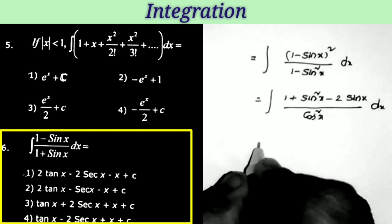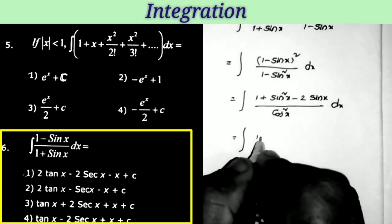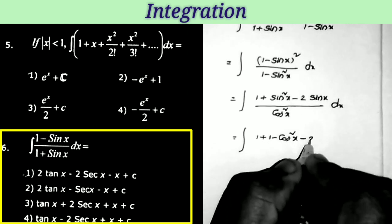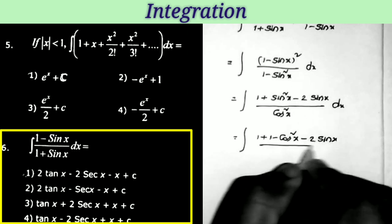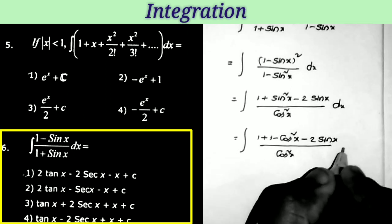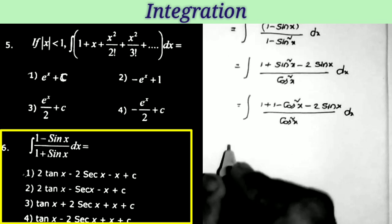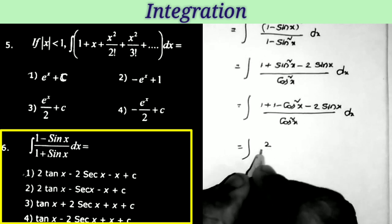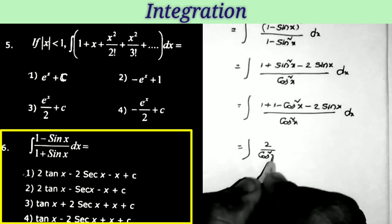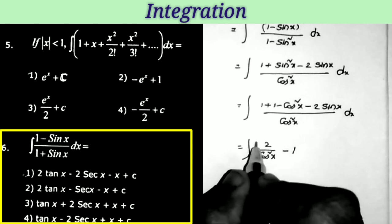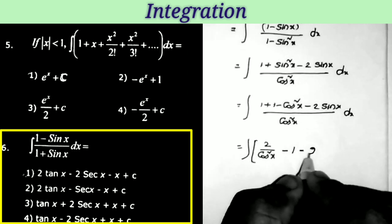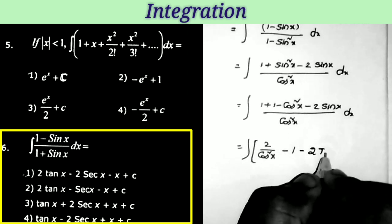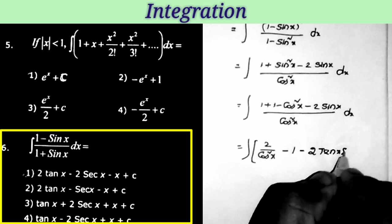Substituting sin²x = 1 − cos²x: numerator becomes 1 + (1 − cos²x) − 2sin x = 2 − cos²x − 2sin x, over cos²x. Separating: (2 − cos²x − 2sin x)/cos²x gives 2/cos²x = 2sec²x, then −cos²x/cos²x = −1, then −2sin x/cos²x = −2·(sin x/cos x)·(1/cos x) = −2tan x·sec x.